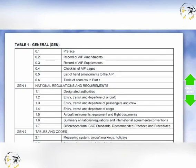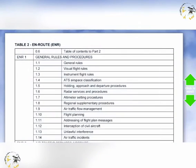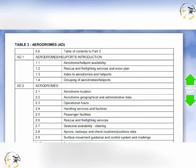Here is the content of the general section of the AIP in some detail — scroll up and down to see what it contains. And here is the en route section. And finally, the aerodrome section of the AIP.